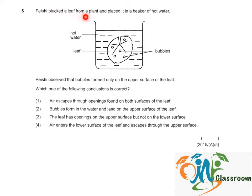Pesci plucked a leaf from a plant and placed it in a beaker of hot water. Pesci observed that bubbles formed only on the upper surface of the leaf. Which one of the following conclusions is correct?